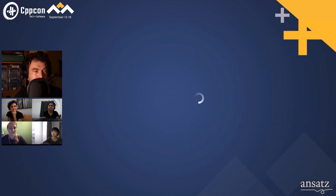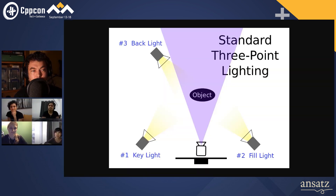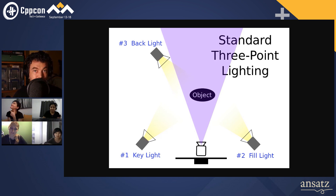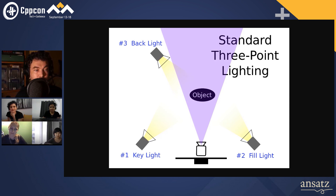This is standard three-point lighting, and this is something we all know in film and video — the way we set up for most interviews and that type of thing. The first thing you want to know is number one: the key light. That's the most important light. I've got a key light right here, it's casting onto my face — onto the majority of my face. This is my main source of illumination and it's just off to one side.